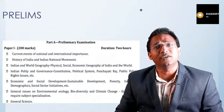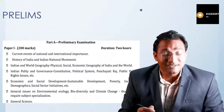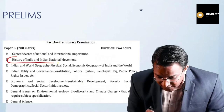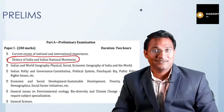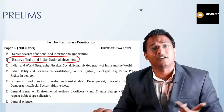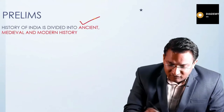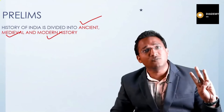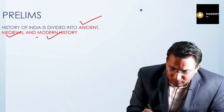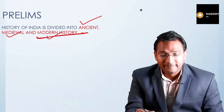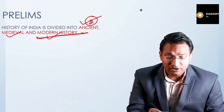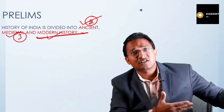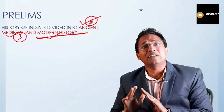The UPSC prelims syllabus is just one line: 'History of India and Indian National Movement.' But from previous year question patterns, we can identify three portions: ancient history, medieval history, and modern history. The highest number of questions comes from modern history, then ancient history, and then medieval history. In the last couple of years, the weightage of medieval history has been increasing.